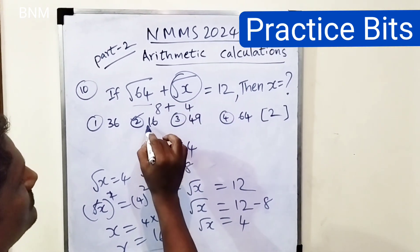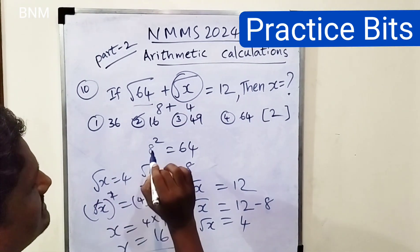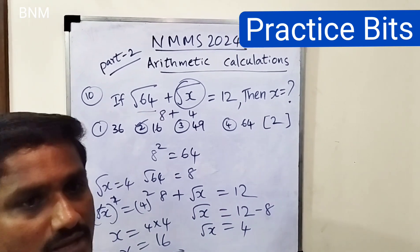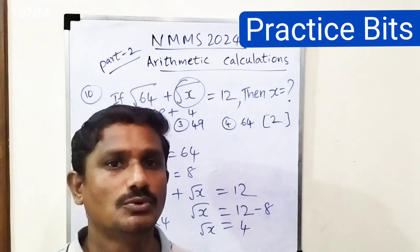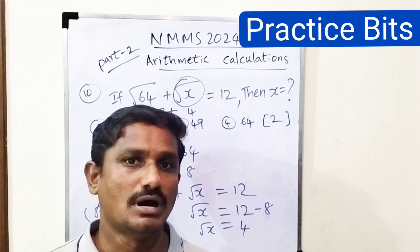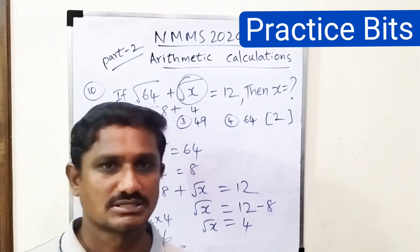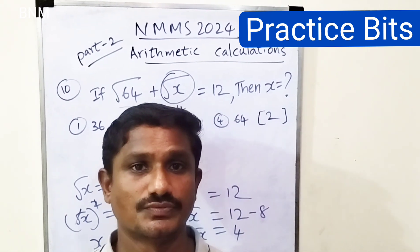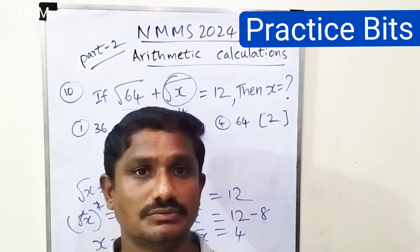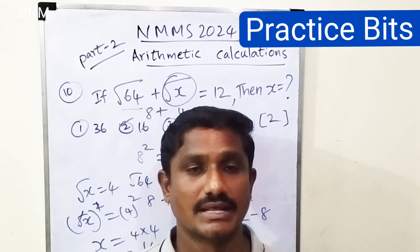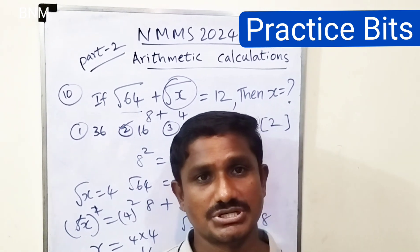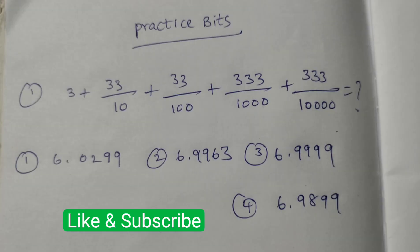The root is 16. Then 8 plus 4 equals 12, so x equals 16. The answer is confirmed. I will do the same practice bits — now you should check out the answer in the comment box and tell the answer.